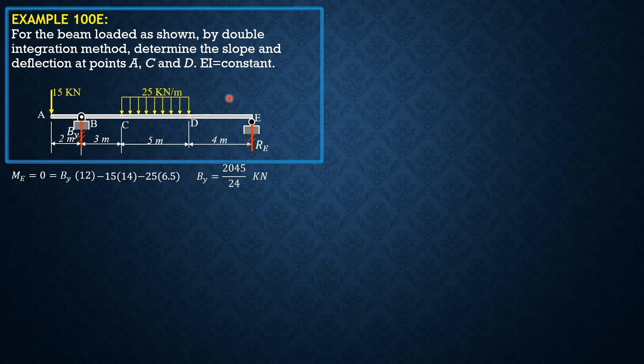Then we now set up the moment equation for the entire span from A to E, with X measured from A as our origin. This time A will deflect, therefore C sub 1 and C sub 2 are present, where C sub 1 is the slope at A and C sub 2 is the deflection at A.